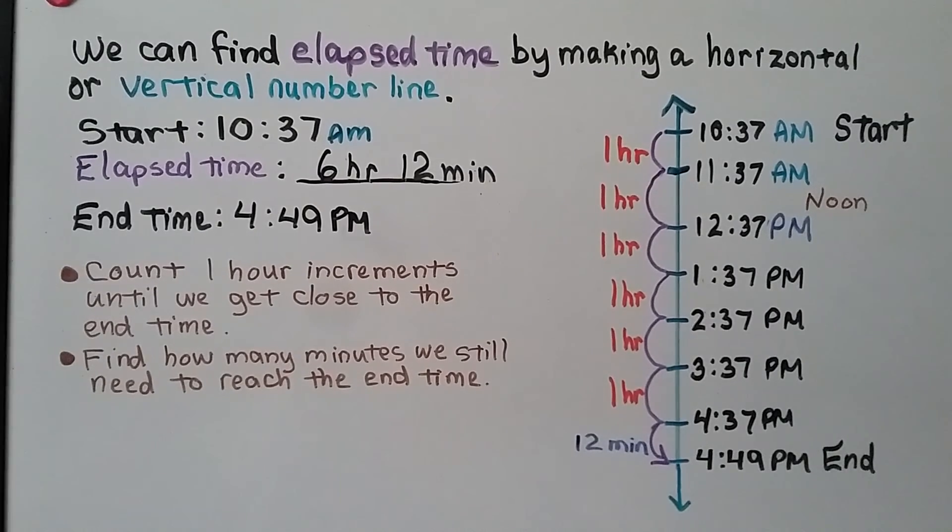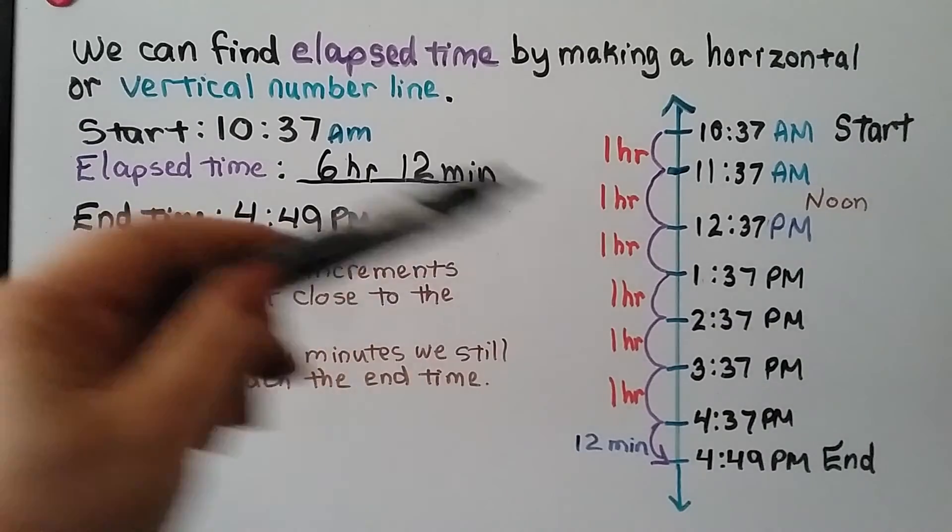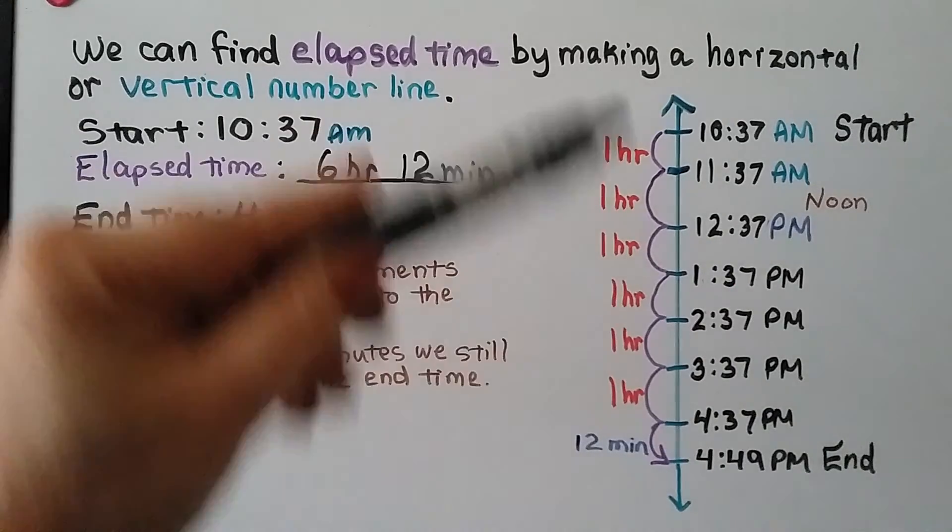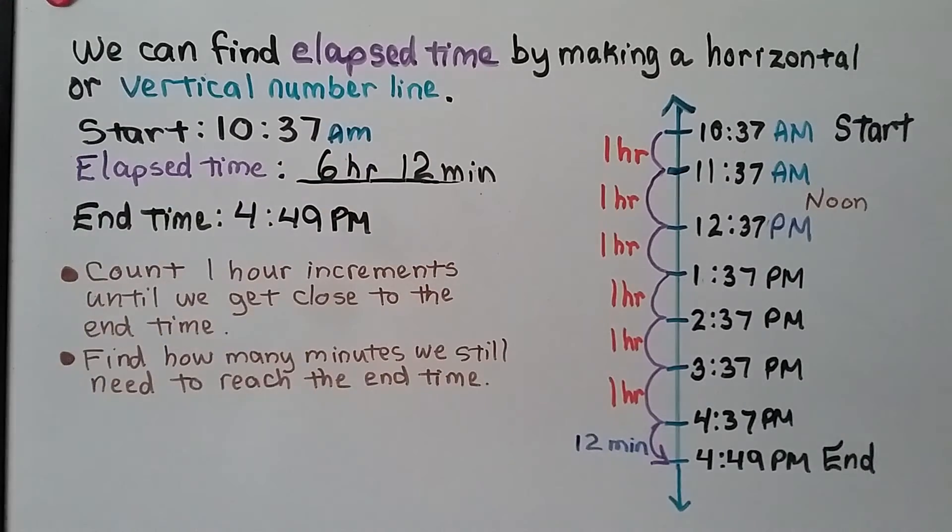So we can use the number line horizontally going across this way or vertically going up and down, whichever is easier for us.